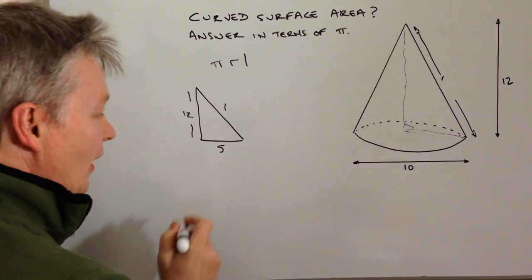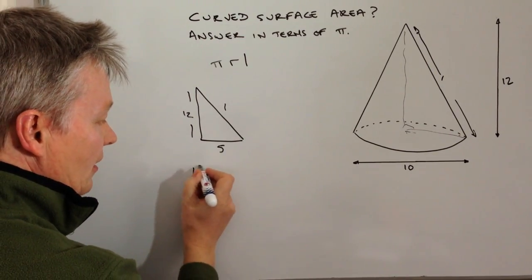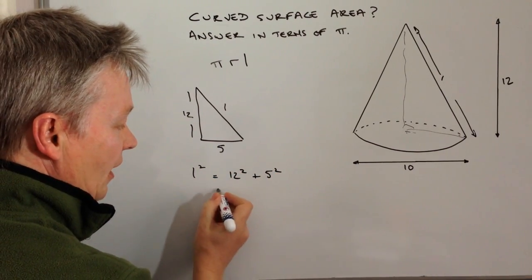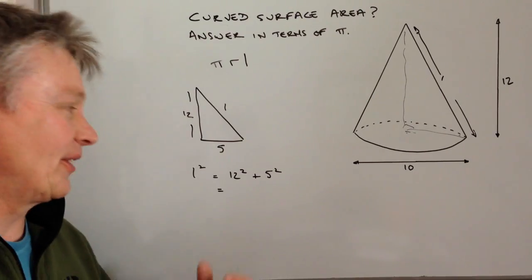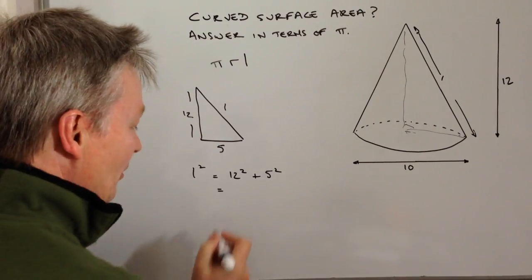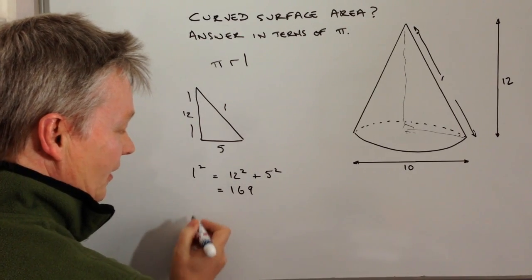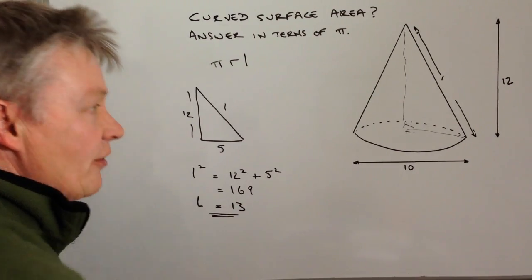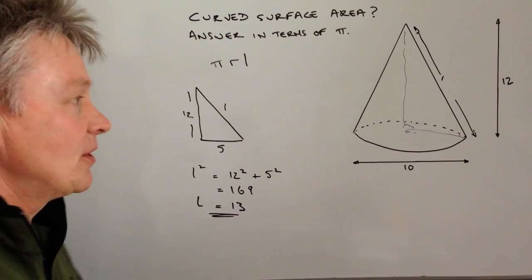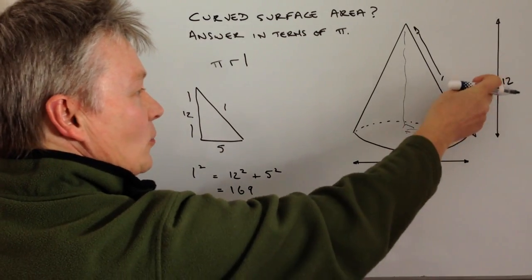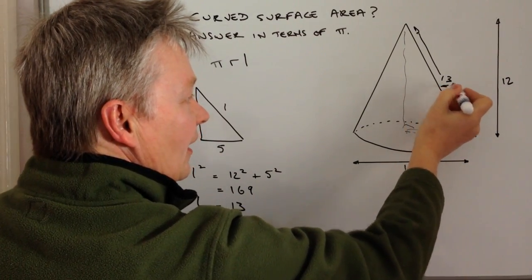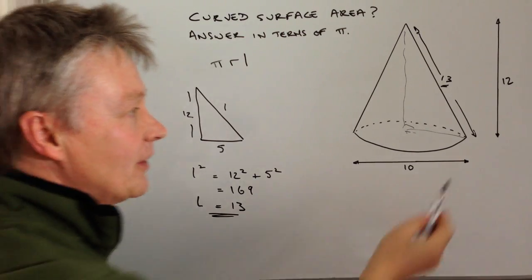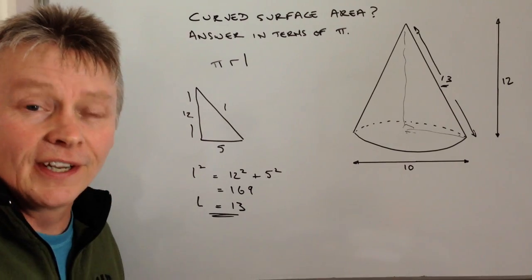Using Pythagoras, we're going to say that L² equals 12² plus 5². You can do that by mental arithmetic or pop it in your calculator, but it works out that L² is 169, or L is 13. So the slant height for this cone is 13, not 12. It's really important—these types of questions come up quite a lot and people make mistakes by using the overall height.